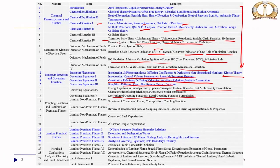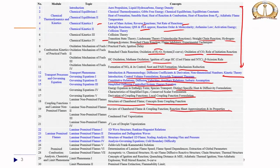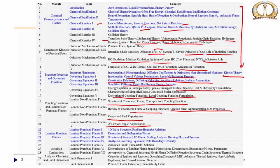Then we moved into non-premixed flames. We looked into the structure of a 1D chambered flame — which can be considered the most fundamental non-premixed flame — using coupling functions, reviewing the reaction sheet approximation and its properties. Then we looked into condensed fuel vaporization, because all these engines use liquid fuels. It is important to understand how liquid fuels evaporate, mix, and then react in gas phase. So we looked into the d-squared law of droplet vaporization.